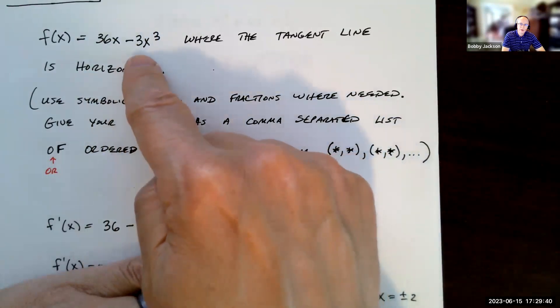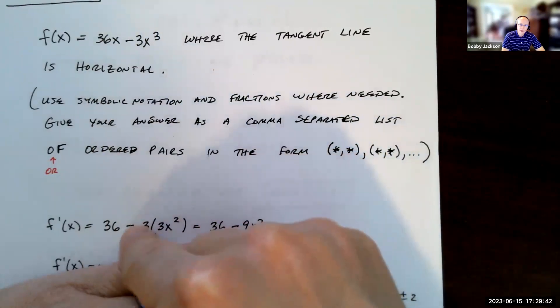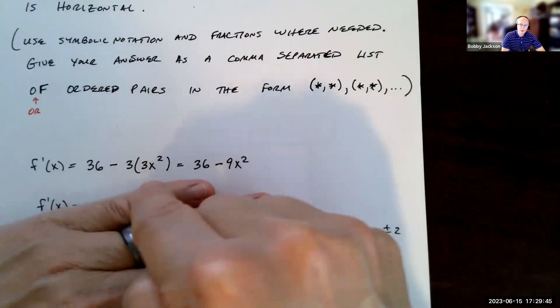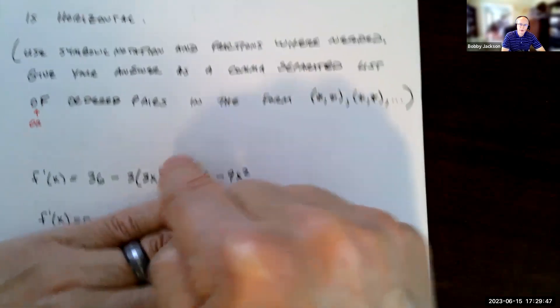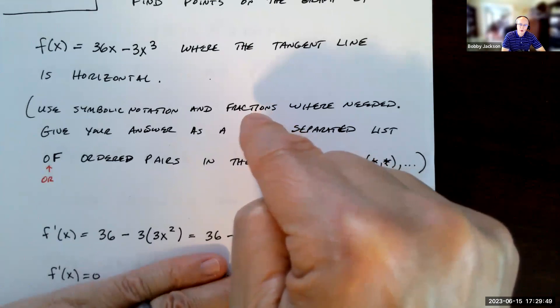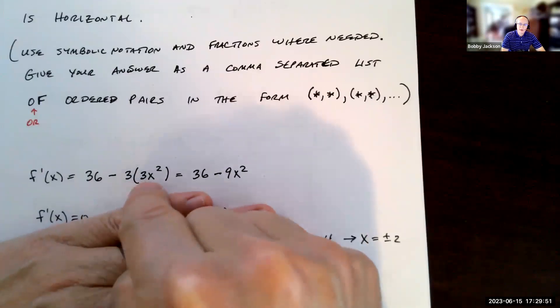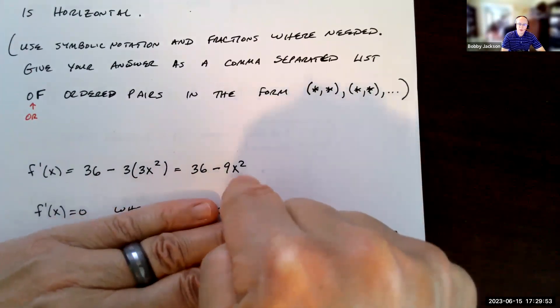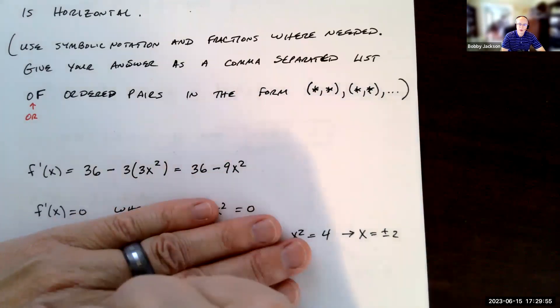What's the derivative of negative 3 times x cubed? Well, negative 3, that's a constant multiple. The derivative of x³ is 3x² by the power rule. So just clean this up. 3 times 3, I get 36 - 9x². And there's my derivative.